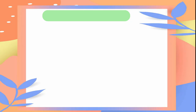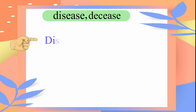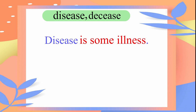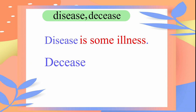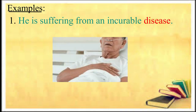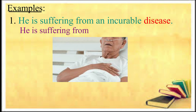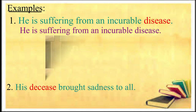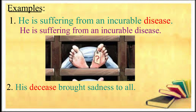The next set of words is DISEASE and DECEASE. DISEASE is some illness, whereas DECEASE (D-E-C-E-A-S-E) is death. Please repeat these sentences: He is suffering from an incurable disease. His decease brought sadness to all.